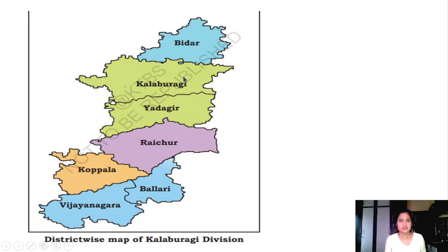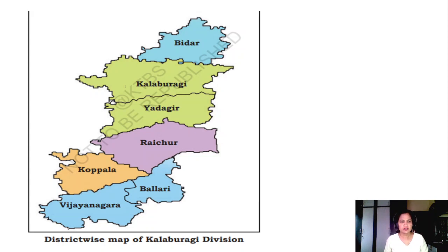Kalburgi and Yadgir together used to be called Gulbarga, or Kalburgi - one district - but now these two are divided. Before, Vijayanagar district was under Ballari district, now it is divided. Raichur and Kopla were divided - Kopla became a district due to increase in population. Before, Raichur and Kopla together were called Raichur district, and Kalburgi and Yadgir together were called Gulbarga district.